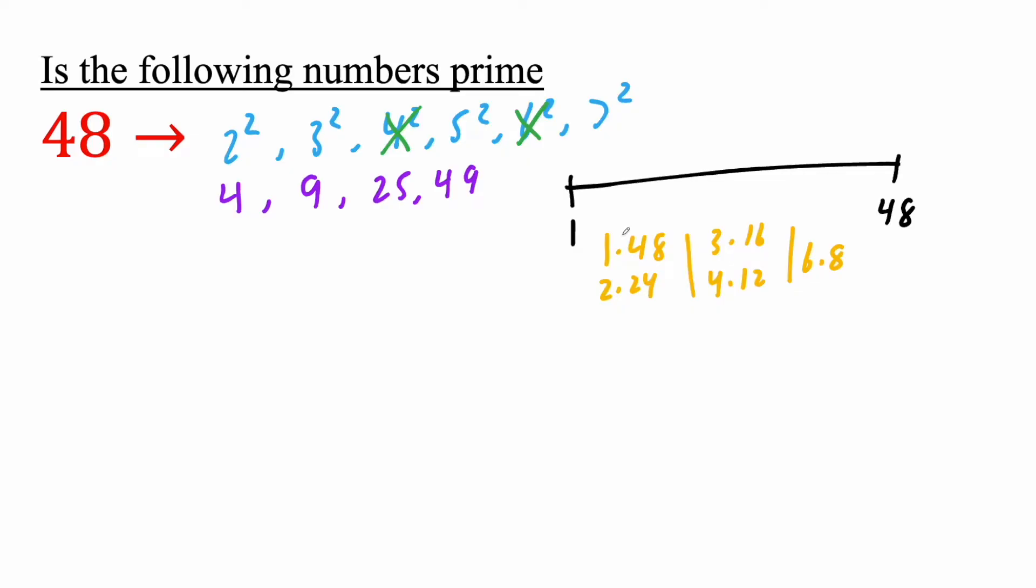Now, one thing you'll notice with every number here is one number is small, one number is large. Small, large, small, large, small, large. And you can have a situation where you're the same number. Like if this was 49, you could have 7 and 7. But no matter what, one number is going to be small, one's going to be large, or they're going to be the same, which kind of makes sense. You can't have two large numbers. And so that's why there's no need to go beyond 7. Like if you go 8 squared, you're already too big.